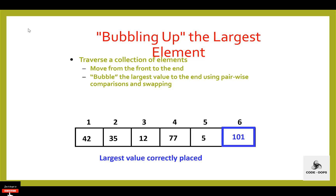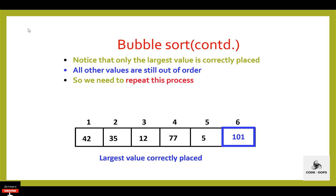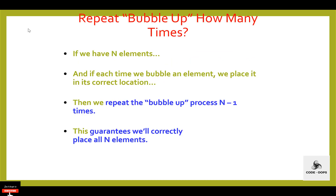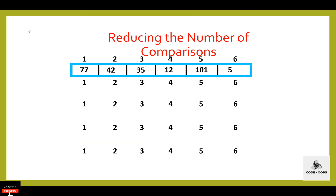The largest value is correctly placed. But all other values are still out of order, so we need to repeat this process. If we have n elements and each time we bubble an element and place it in its correct location, then we repeat the bubble-up process n minus 1 times. This guarantees we will correctly place all n elements.